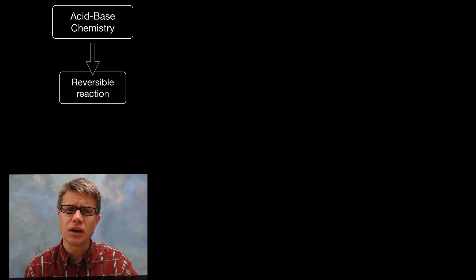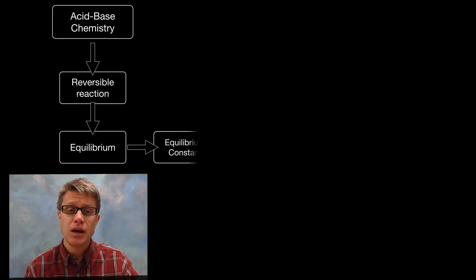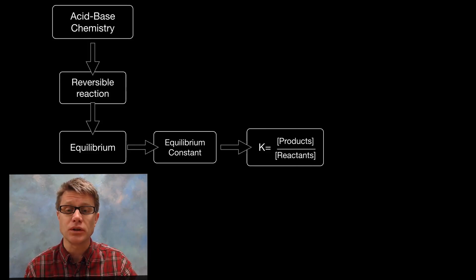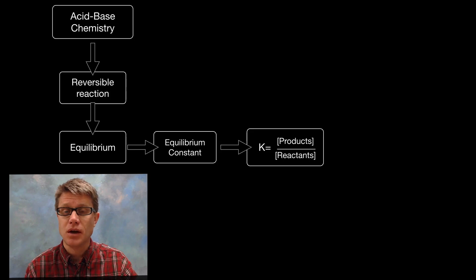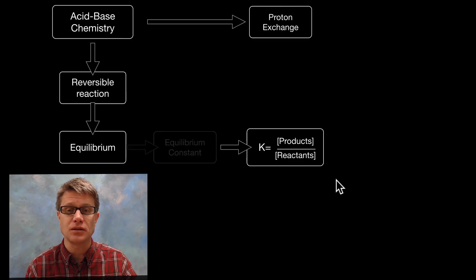You just have to understand that it's a reversible reaction. That means it will eventually achieve equilibrium. We've learned that you can measure the equilibrium constant, and that gives us a better understanding of what's going on in acid-base chemistry. The equilibrium constant is simply the concentration of the products divided by the concentration of the reactants.